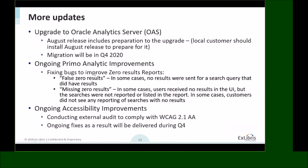Regarding Primo analytics improvements: we had many cases reported about the zero results report. We dedicated significant time this quarter to identify cases that should be reported as zero results. We fixed bugs causing false zero results — where users actually saw results but the system reported zero — and also fixed cases where users got zero results but the application didn't report it to analytics. These fixes are coming with the August release for both Primo and Primo VE.